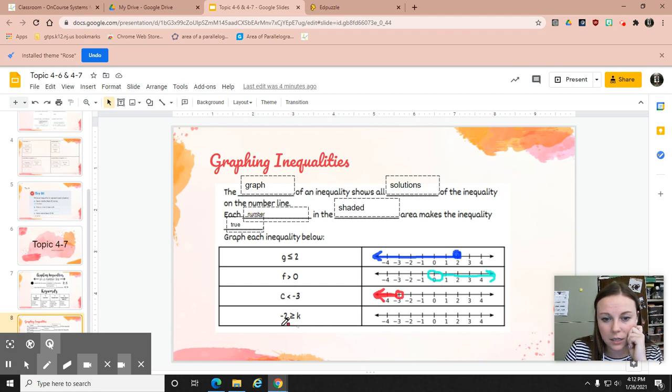And this one is tricky, so I would just read it in reverse. So start with the variable and read it that way. So K is less than or equal to negative 2. I can't just flip the numbers around without changing the symbol. If I'm going to flip the numbers, the sign also has to flip. Because that point is facing the K, so notice the sign flips as well. So K is less than or equal to negative 2.